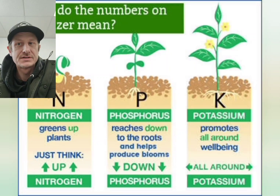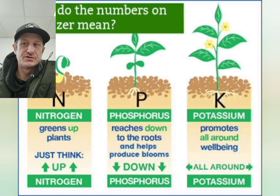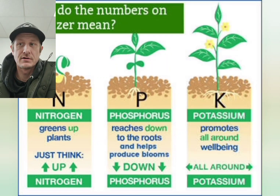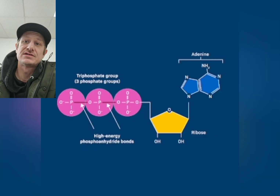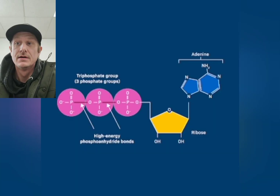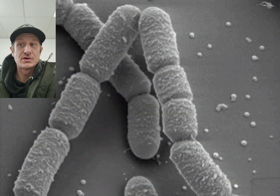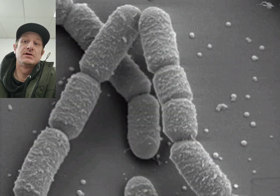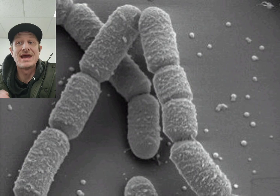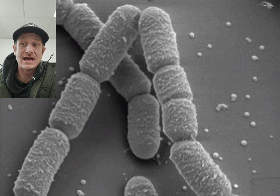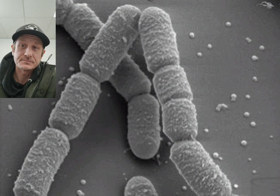We all know that phosphorus is an essential nutrient for plant growth — it fuels root development, energy transfer, and flowering. Without the help of soil microbes, much of that phosphorus in the soil will remain locked away, unusable by plants.